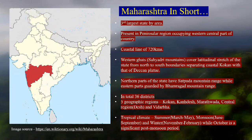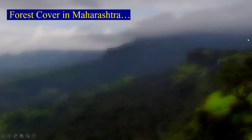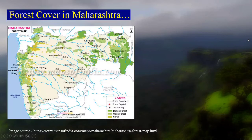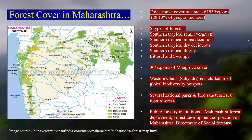Regarding forest cover in Maharashtra, you can clearly see the green parts on the map which represent forest cover. As per thick forest cover, Maharashtra has only 20.13% of its total geographic area. There are typically five forest types, all tropical.